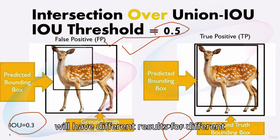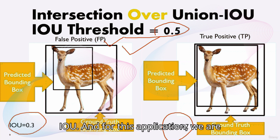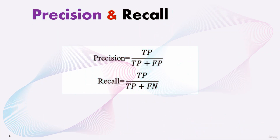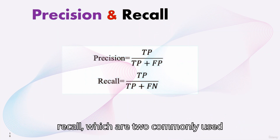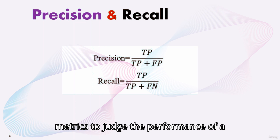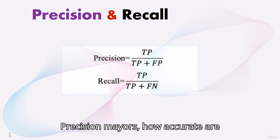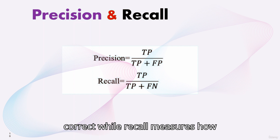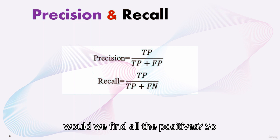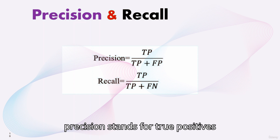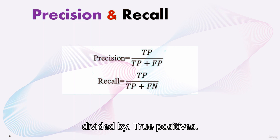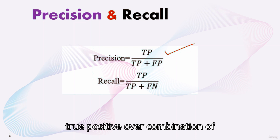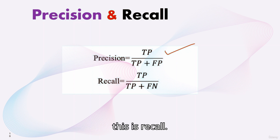Now we will discuss precision and recall, which are two commonly used metrics to assess the performance of a given model. Precision measures how accurate your predictions are — for example, the percentage of predictions which are correct. Recall measures how good we are at finding all the positives. Precision equals true positives divided by true positives plus false positives. Recall equals true positives divided by true positives plus false negatives.